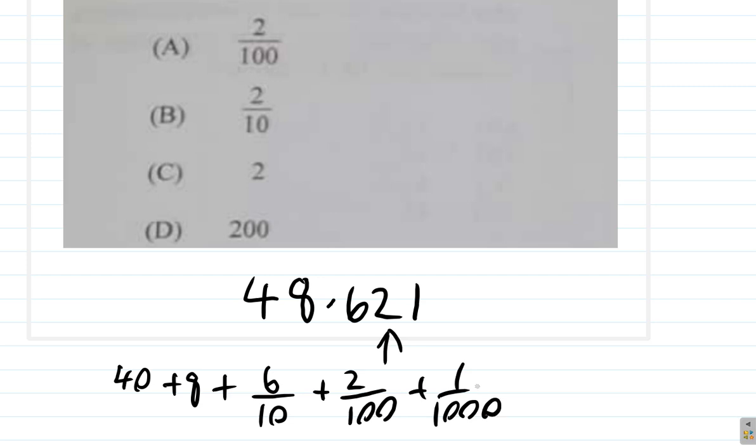It's 6 tenths, 2 hundredths, 1 thousandth. They add to each other. So it's 4 tens plus 8 ones plus 6 tenths plus 2 hundredths plus 1 thousandth.